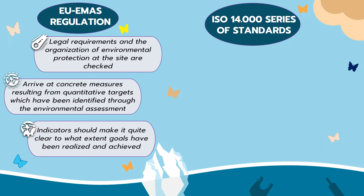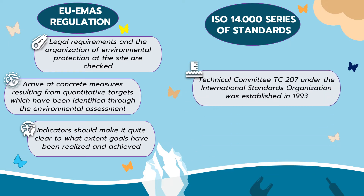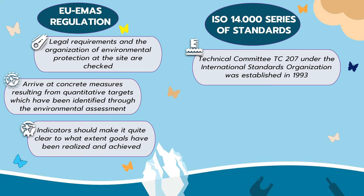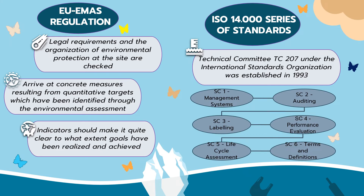The ISO 14000 series of standards for environmental management. To arrive at a worldwide methodology of tools for environmental management, a separate technical committee TC 207 under the International Standards Organization was established in 1993. It was divided into various subcommittees (SCs) and work groups to create the series of standards 14000, which would account for all aspects of environmental management. The SCs deal with the following items: 1. SC1 — Environmental Management Systems. 2. SC2 — Environmental Auditing. 3. SC3 — Environmental Labeling. 4. SC4 — Environmental Performance Evaluation. 5. SC5 — Life Cycle Assessment. 6. SC6 — Environmental Management Terms and Definitions.